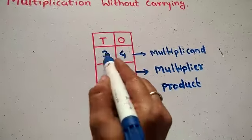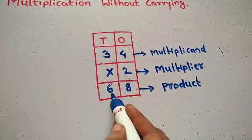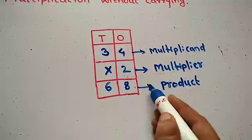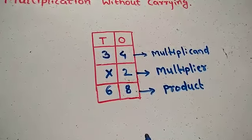So the final answer is 34 multiplied by 2 is equal to 68. 68 is the product of this multiplication.